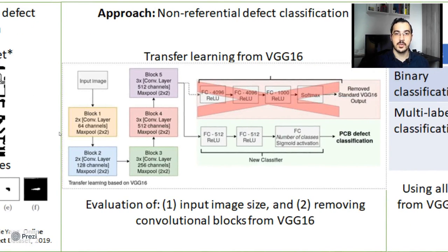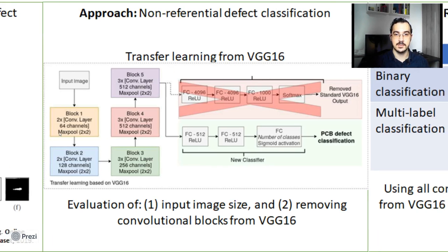Our proposed approach is non-referential — a single image, defective or not, is shown to the classifier. We use a Transfer Learning strategy from VGG16, evaluating input image size and removing convolutional blocks from VGG16.